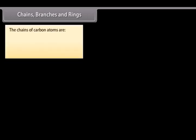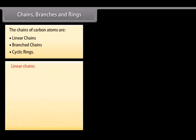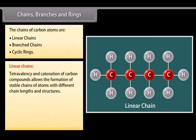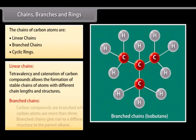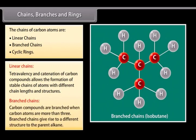Chains, branches and rings. Many compounds contain carbon atoms that are linked with each other. The chains of carbon atoms are linear chains, branched chains and cyclic rings. Linear chains: Tetravalency and catenation of carbon compounds allows the formation of stable chains of atoms with different chain lengths and structures. Branched chains: Carbon compounds can be branched when the carbon atoms are more than three. Branched chains give rise to a different structure to the parent alkane.